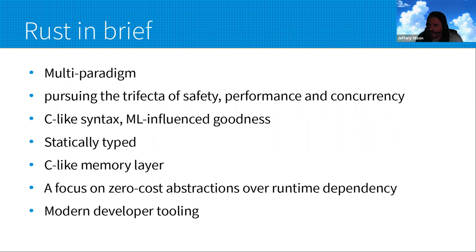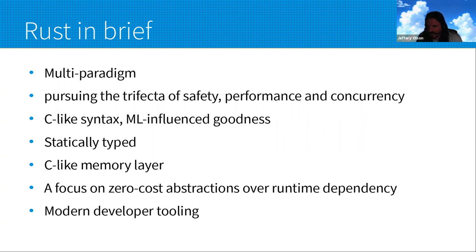The classic description of Rust is that it pursues a trifecta of safety — memory access safety specifically, that's an important caveat — performance chasing a C++-like profile, which the project has been pretty good about, and concurrency, which is subordinate to safety. Anyone who's done multithreaded programming in Rust will tell you the compiler gets on you pretty quick because it is a harsh taskmaster.